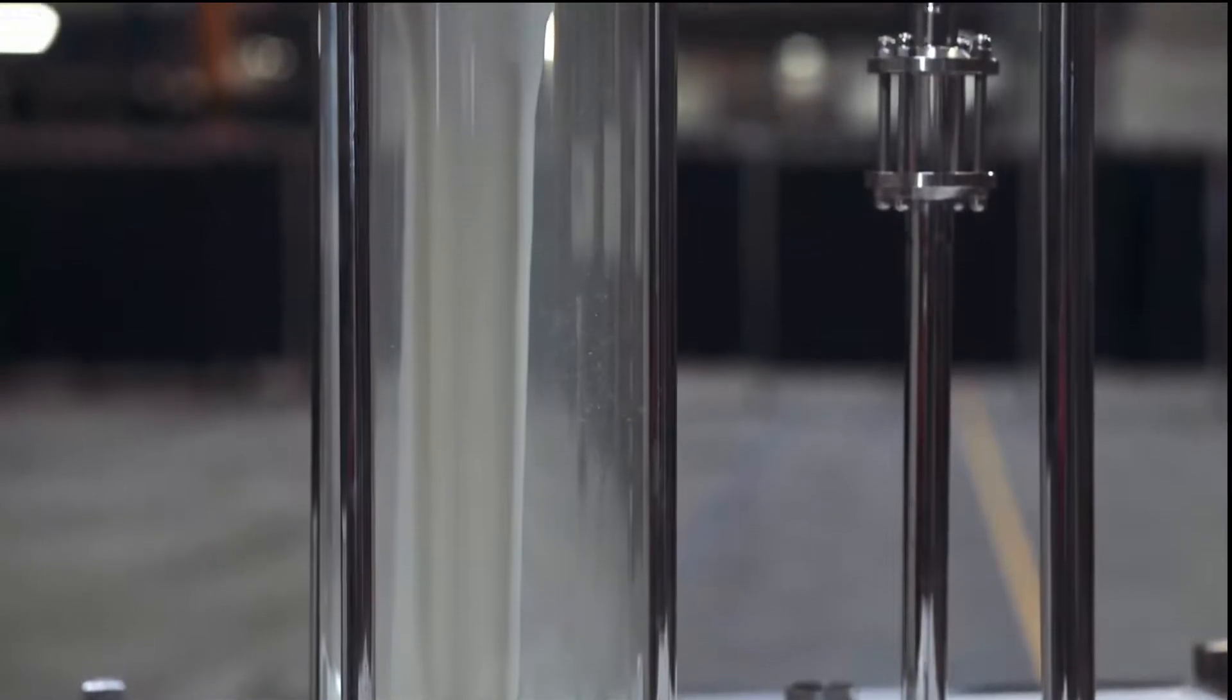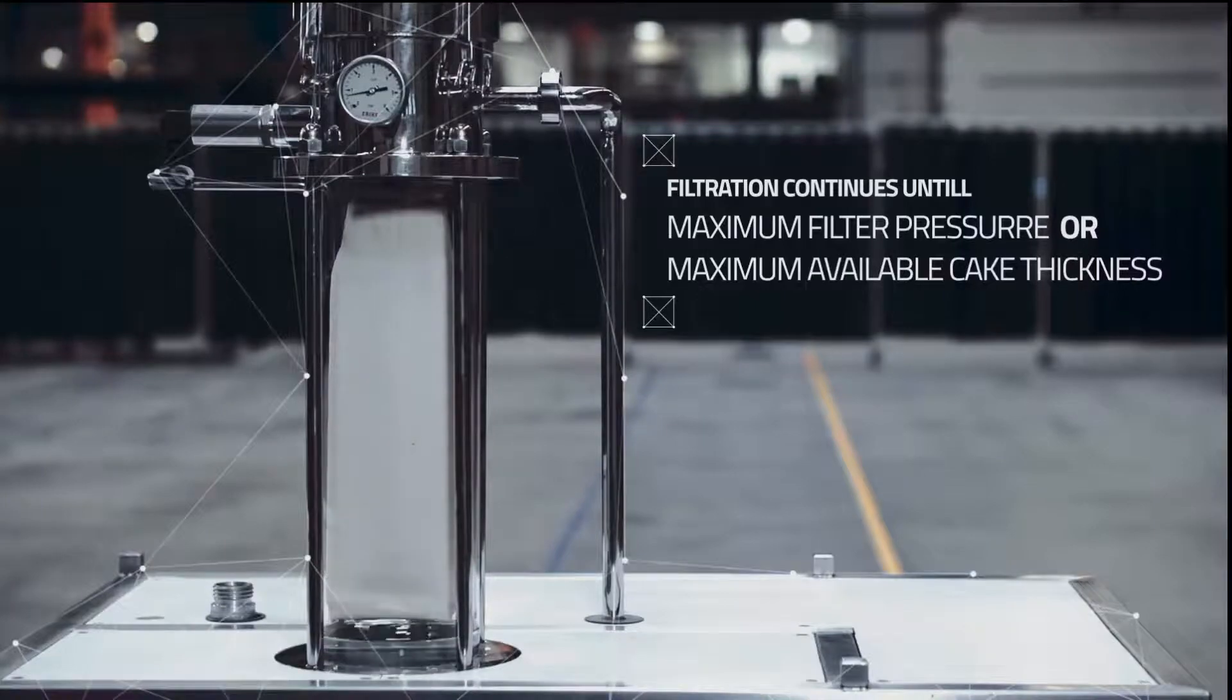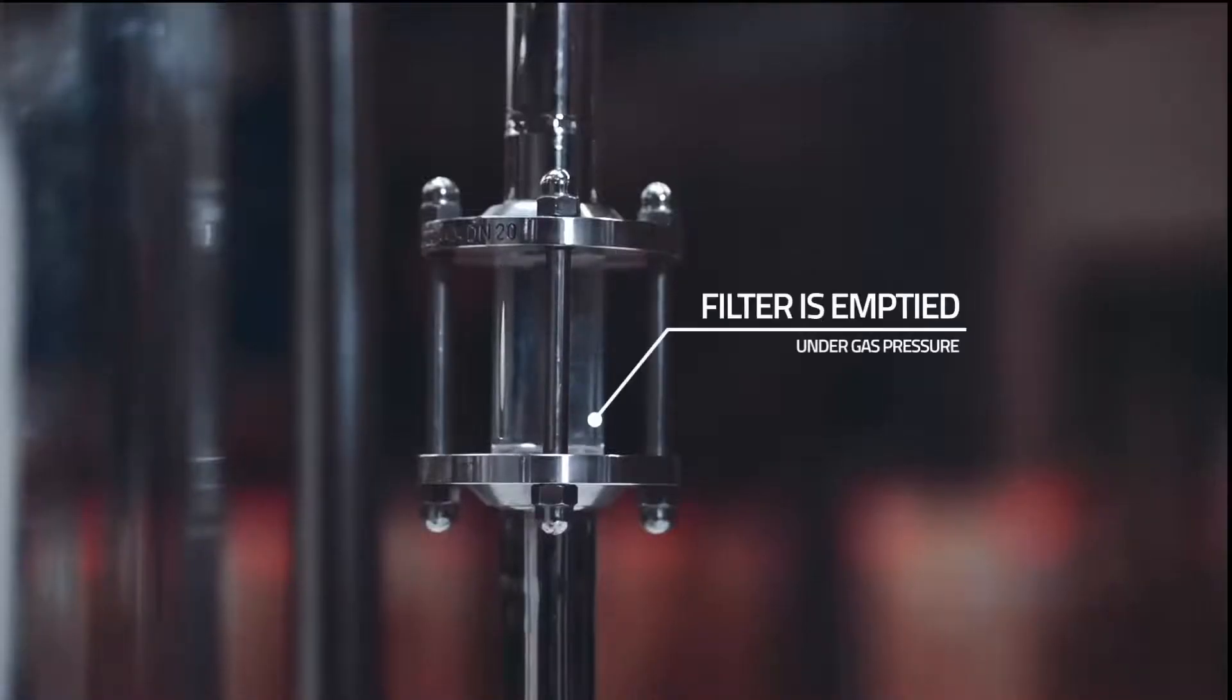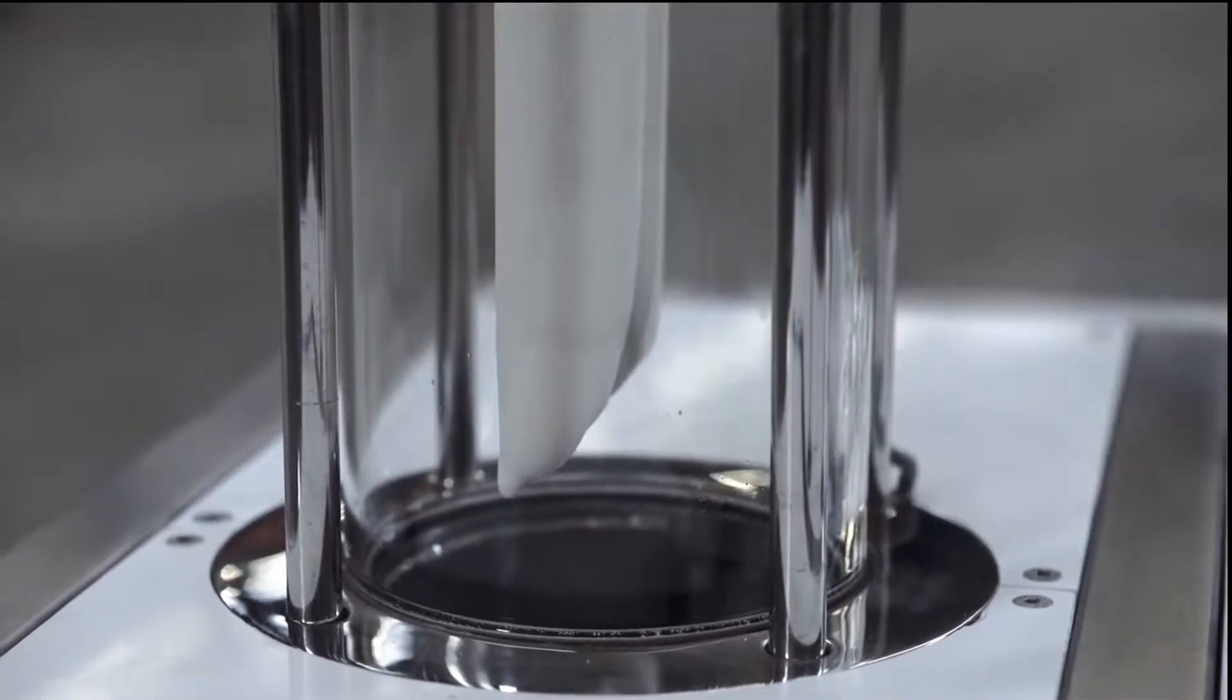The filtration continues until the maximum filter pressure or the maximum allowable cake thickness is reached. After the filtration is stopped, the filter is emptied under gas pressure to keep a positive pressure loss over the filter cake, preventing premature cake discharge.